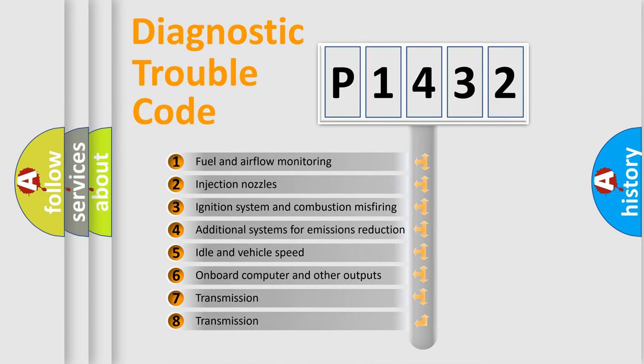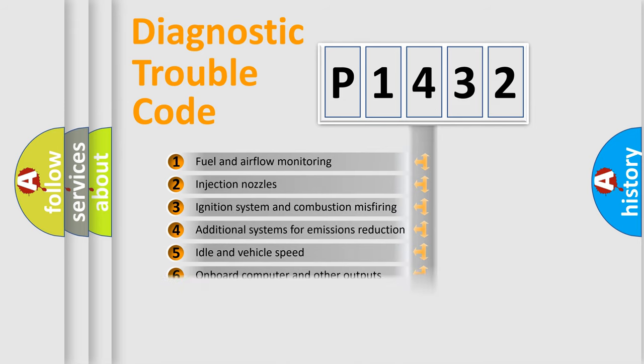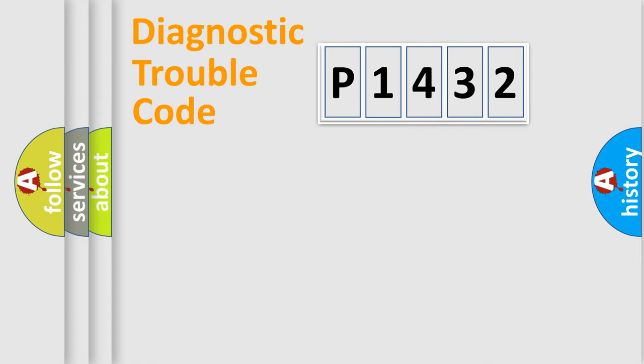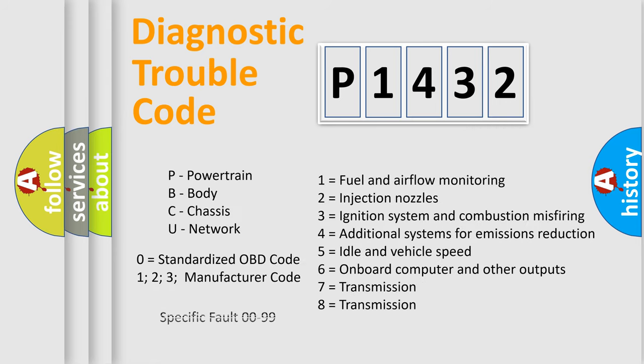The third character specifies a subset of errors. The distribution shown is valid only for the standardized DTC code. Only the last two characters define the specific fault of the group. Let's not forget that such a division is valid only if the other character code is expressed by the number zero.